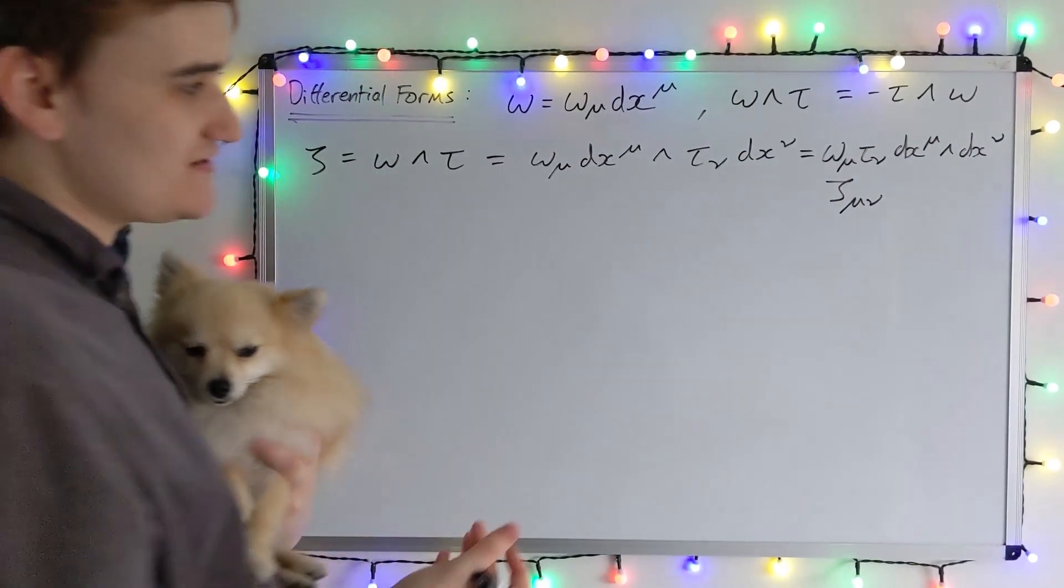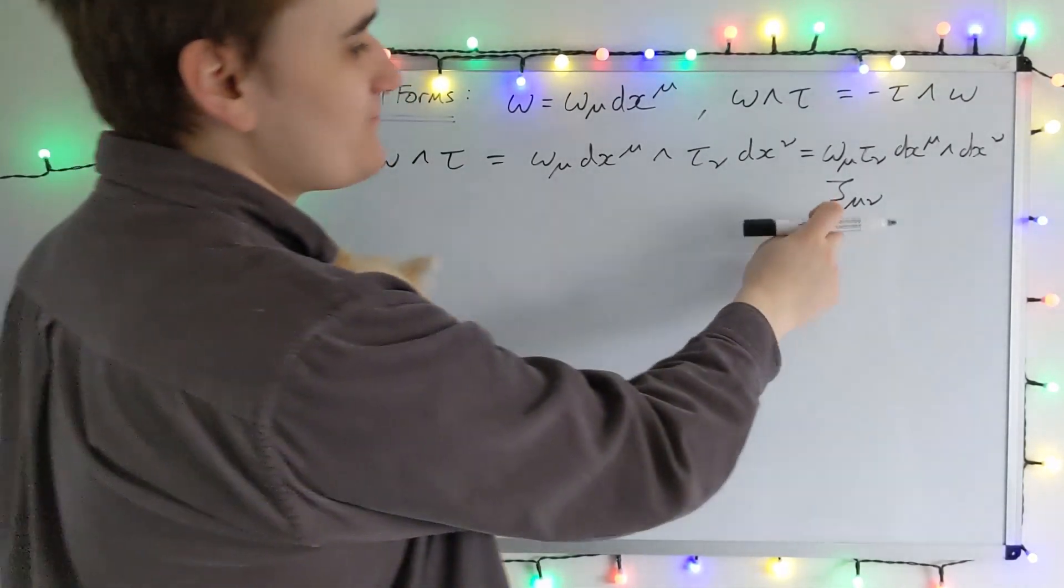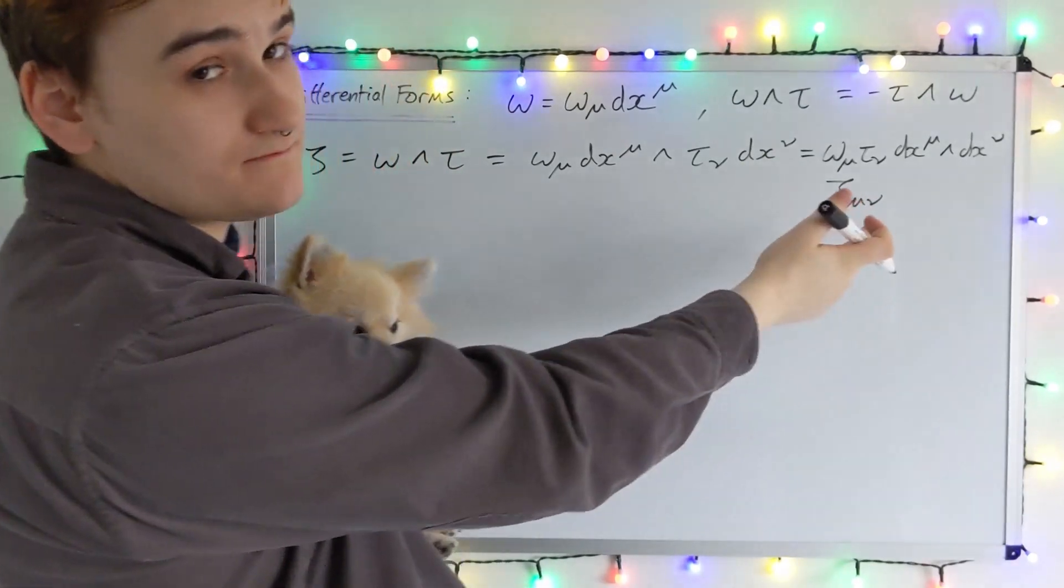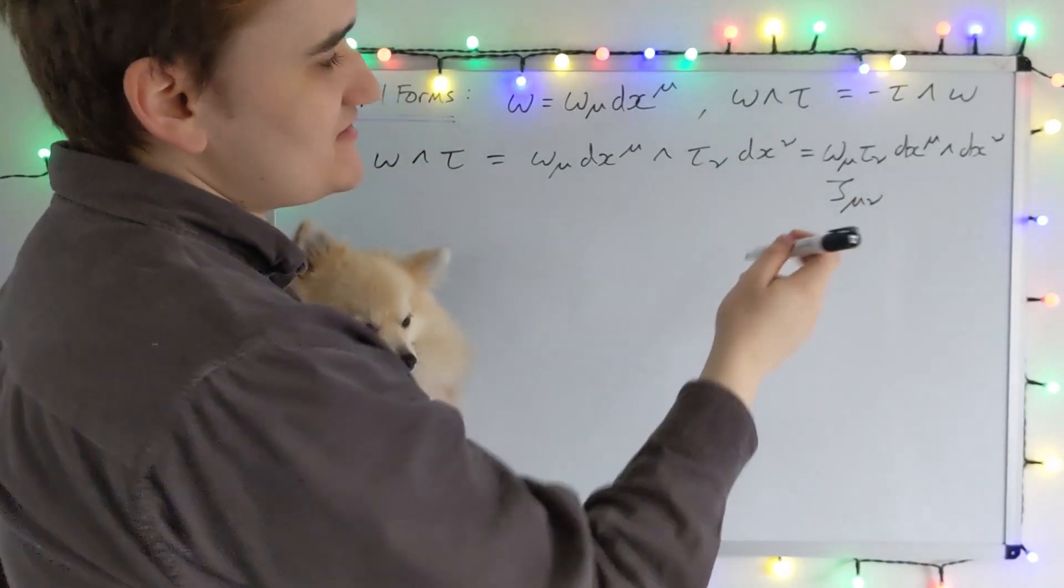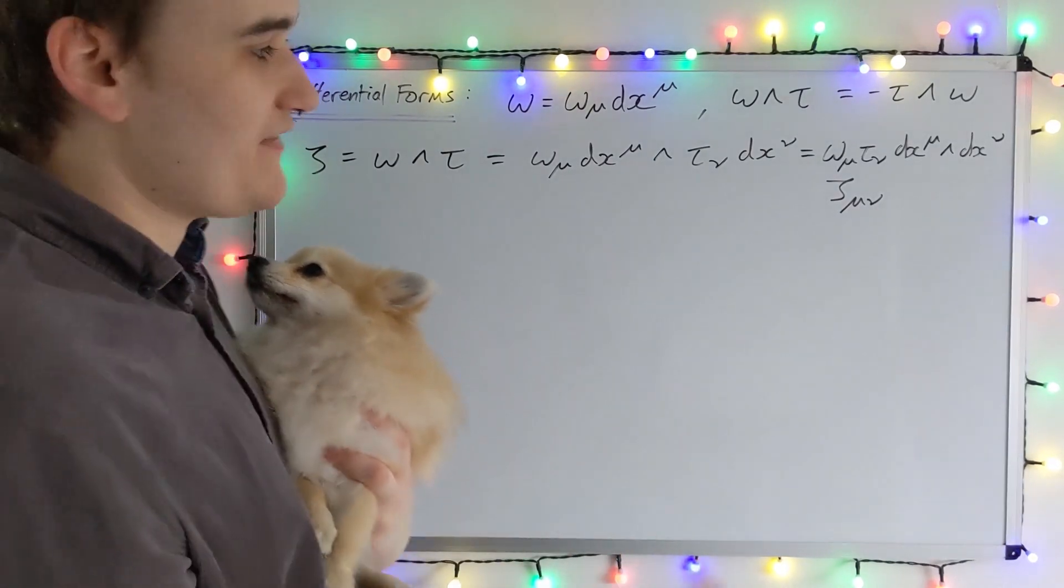Well, not quite. We need to realize something now. We're using the summation convention just implicitly. I'm implying a sum here of a mu nu. But a lot of the terms in this sum we're actually going to discover are either redundant or they vanish.